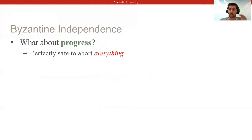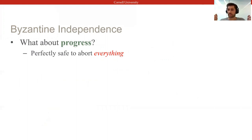This is a strong correctness property to strive for, but it doesn't actually tell us anything about progress. For example, a correct Byzantine-serializable system could still systematically abort all transactions or influence the outcome of our read operations.